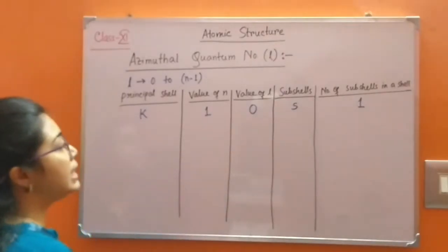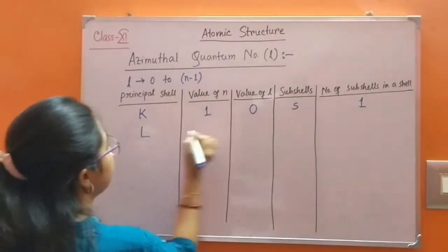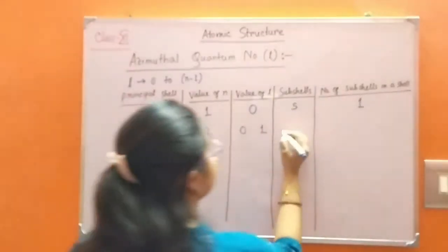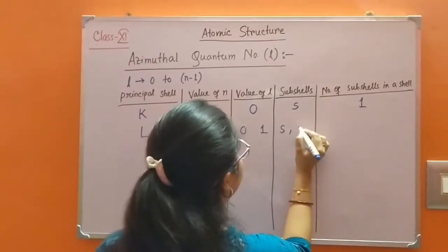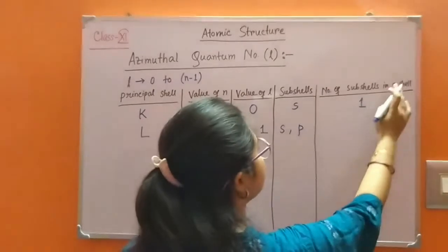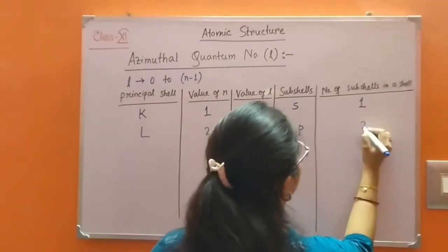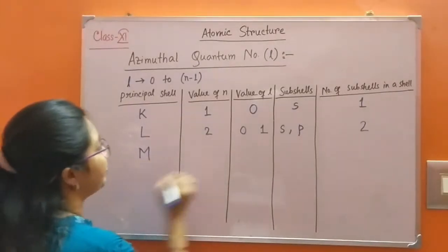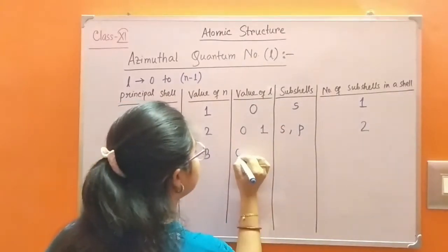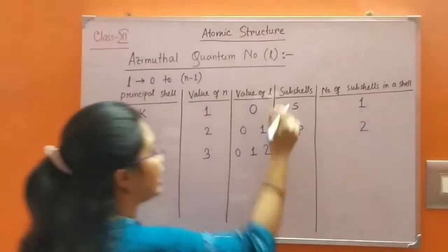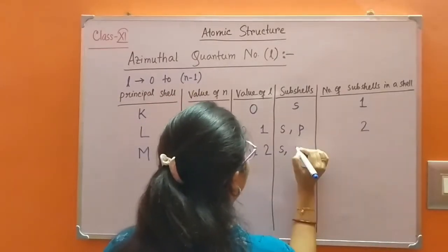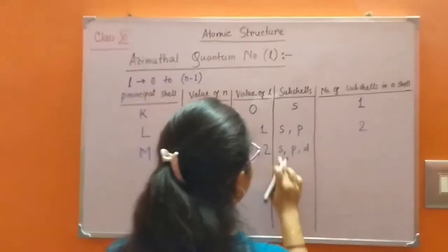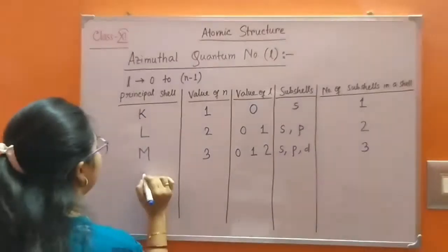Only one sub-shell is present in the K shell. For L shell, N equals 2, L equals 0 and 1. Sub-shell for L=0 is S, and for L=1 is P. So number of sub-shells in the L shell is 2 — one S sub-shell and one P sub-shell. For M shell, N equals 3, value of L is 0, 1, 2. Sub-shells are S, P, D. Number of sub-shells in M shell is 3.